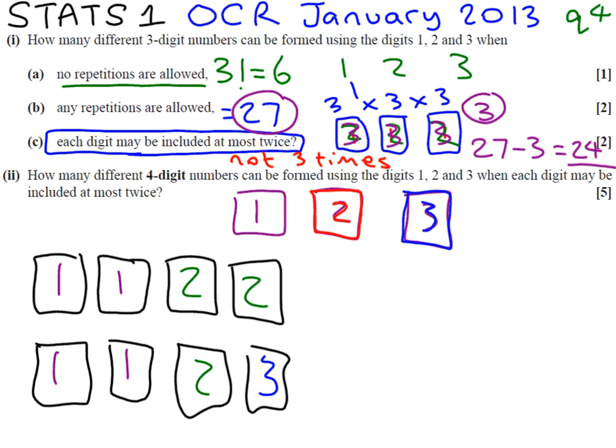Anything else apart from these basic cases is going to repeat more than two times. For example, if you had one, one, one, and then something else or four ones, they're not allowed. So all we have to do is think about how many ways we can get this.